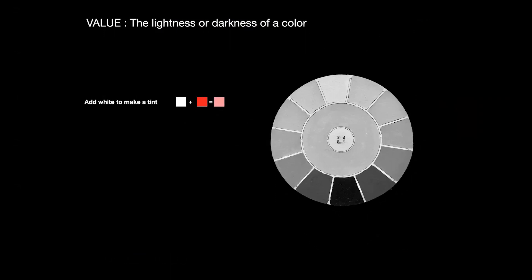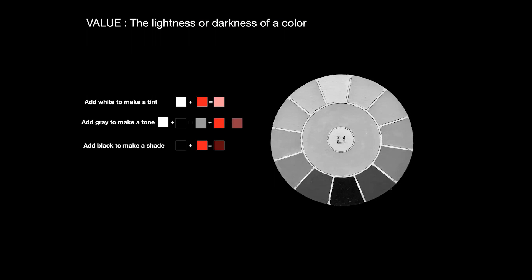We add white to a color to make a tint. We add gray to a color in order to make what we call a tone. We add black to a color in order to create what we call a shade. Note that these are the official ways we use these words to refer to colors that have white, gray, or black added to them. So when we talk about the shade of a color casually, we're actually muddying the waters, because specifically in this world of terminology, a shade means specifically black.